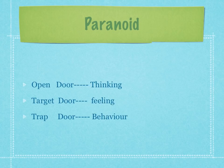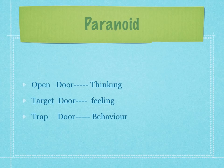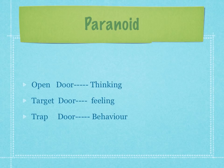The second adaptation is the paranoid adaptation. The open door — their attuned contact door — is thinking. They're very good thinkers. The target door, what you're aiming for underneath the thinking, is feelings. And the trap door, which they want to keep away from at all costs, is behaviour. So if you want to tune in well to them and increase rapport, ask them thinking questions. They're good thinkers — they've had to do that to protect themselves in the past and to be able to predict the future and the present.